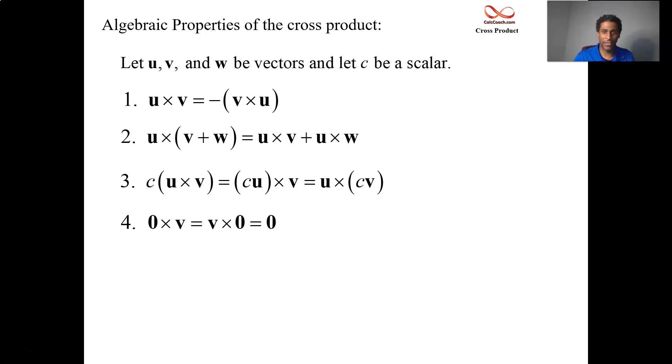The zero vector cross with any vector is automatically going to be the zero vector in whatever order. When you cross a vector with itself, you get the zero vector.